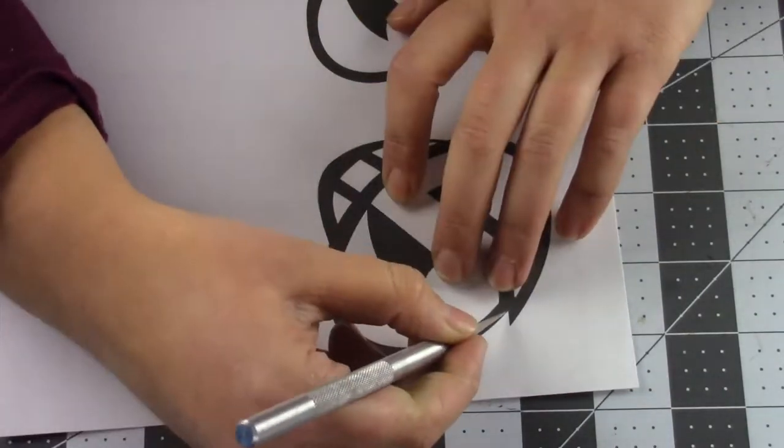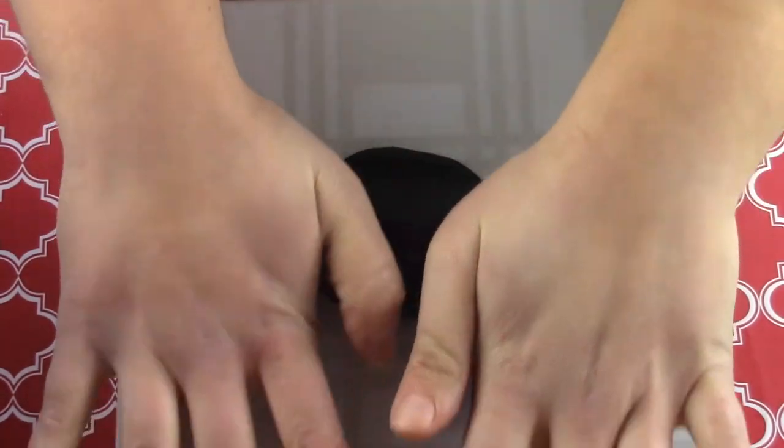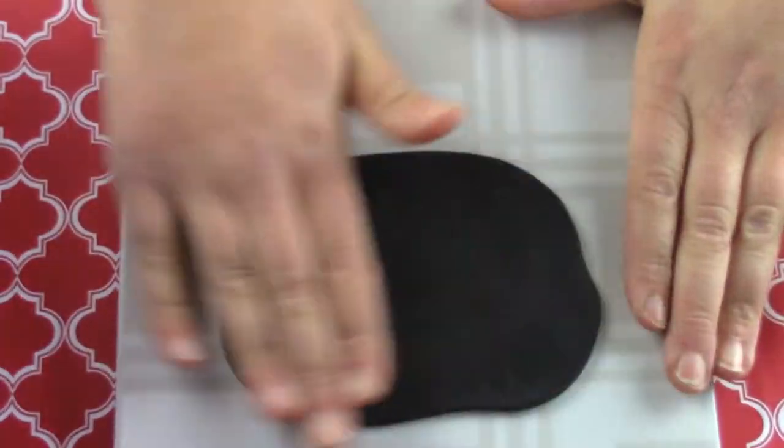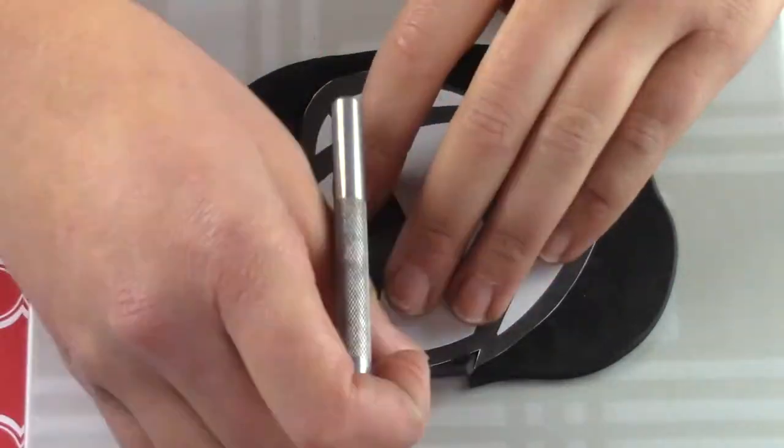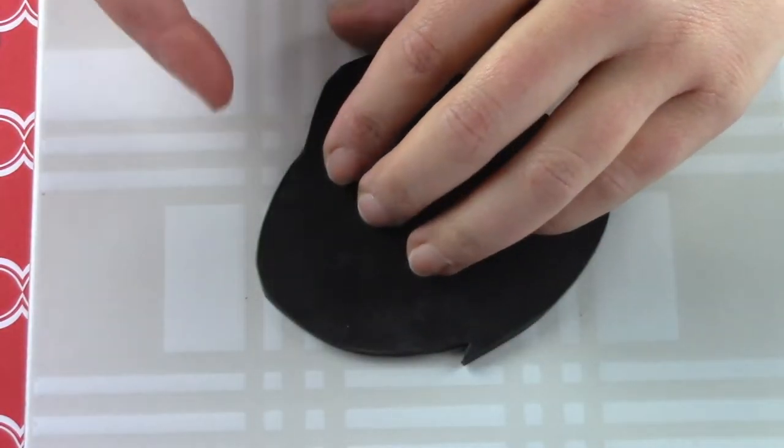First, cut out the logo using scissors or your exacto knife. Condition and flatten the black clay. Make sure it's big enough to fit the logo. I used my pasta machine on a level one for this. Use an exacto knife or your sharp edge to cut the logo out of the clay. Smooth the edges of this piece with your fingers and then put it to the side.